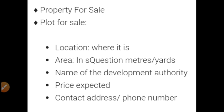The next category is 'Property for Sale' or 'Plot for Sale' — these two have the same criteria. Here you specify first the location, where the plot or property is located; then the area in square meters, square yards, or square feet, whatever the measurement; then the name of the development authority (which comes in metro cities); then price expected; and at last contact address and phone number.